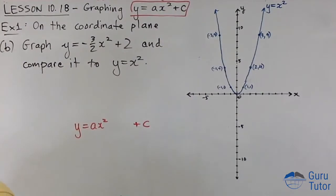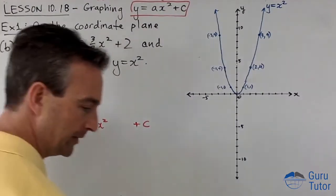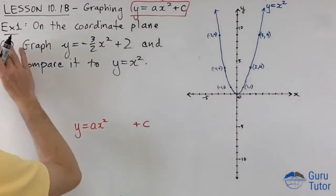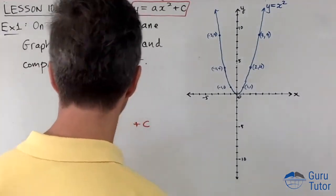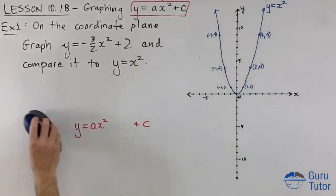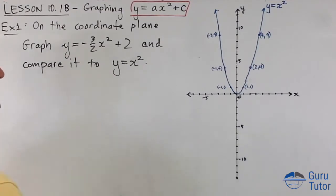And we're going to do this first example. That should be a, not b. I don't know why that's there. There is no b, it's just this one question. Graph y equals negative 3 over 2 x squared plus 2, and compare it to y equals x squared.